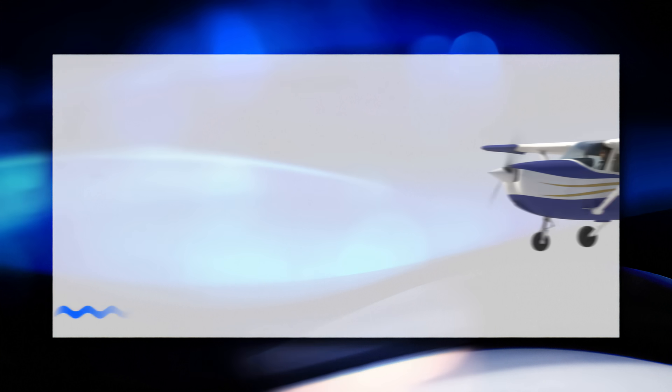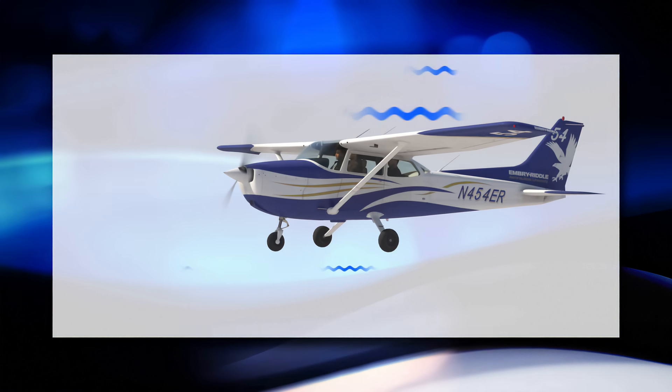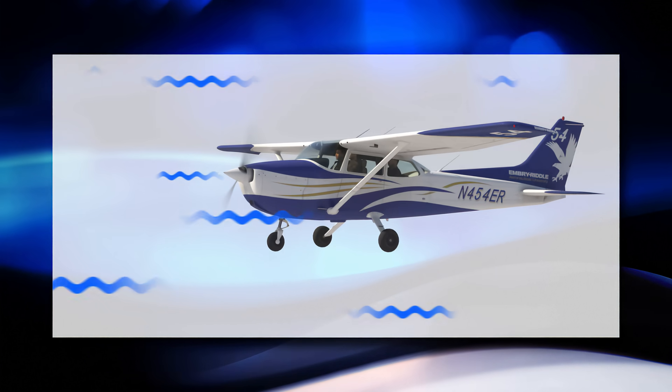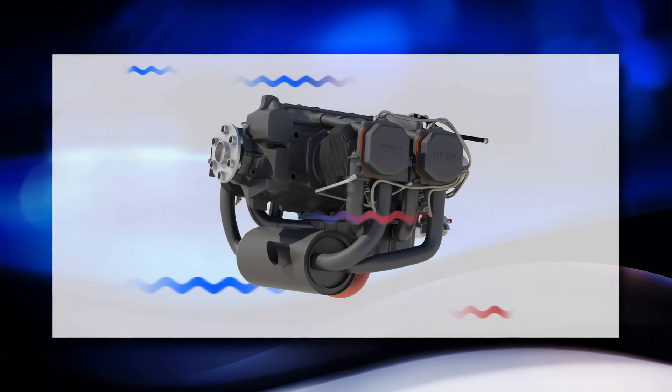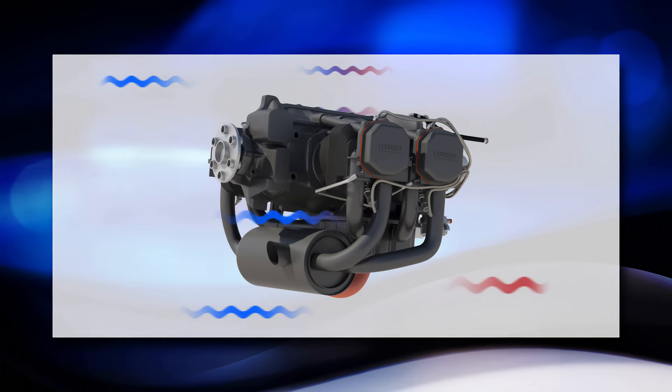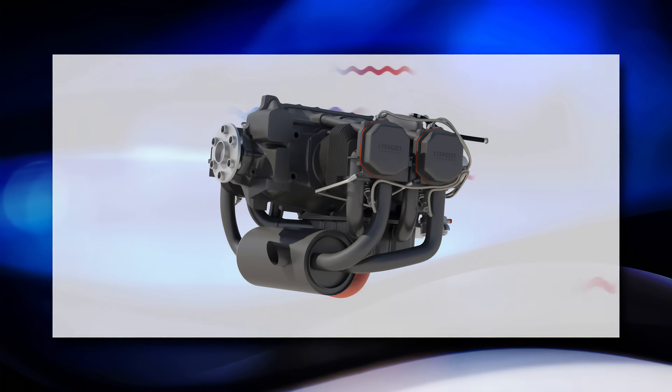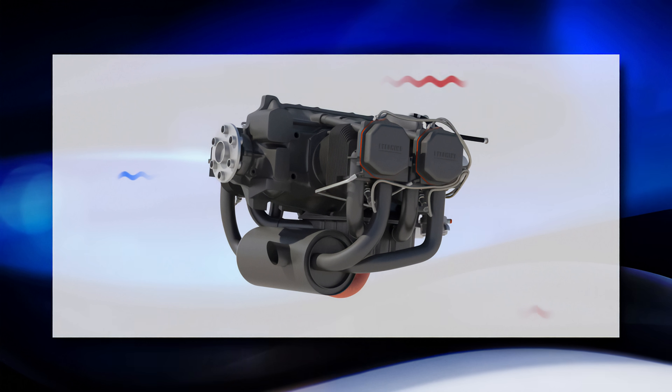However, we also use air to cool our engines. As the airplane flies through the air, outside air flows through inlets usually found on the front of the airplane like the Cessna 172. This outside air is colder than the engine, so as the air flows over the engine, it cools it in the same manner that the oil cools the engine.